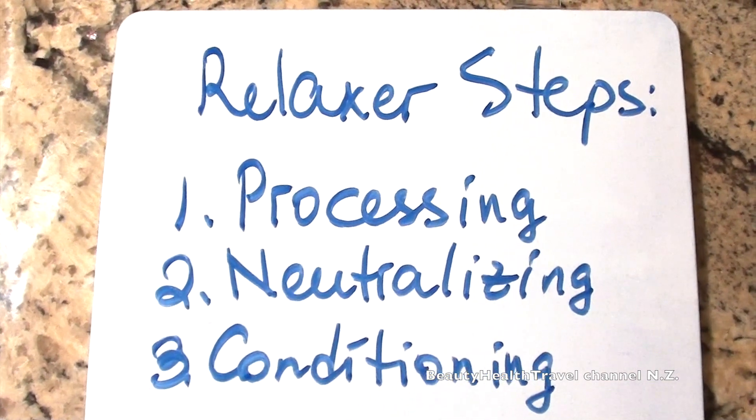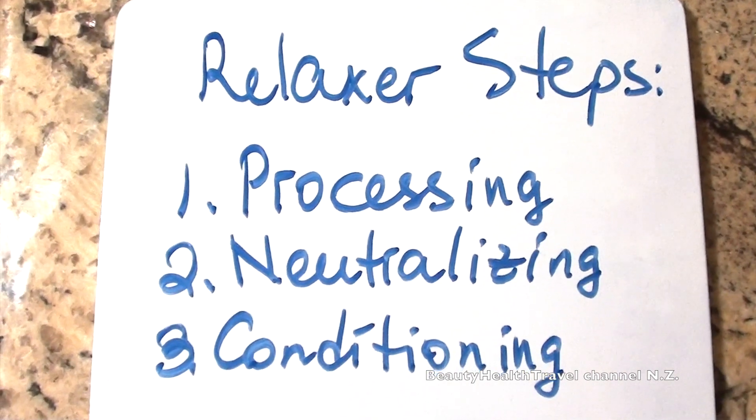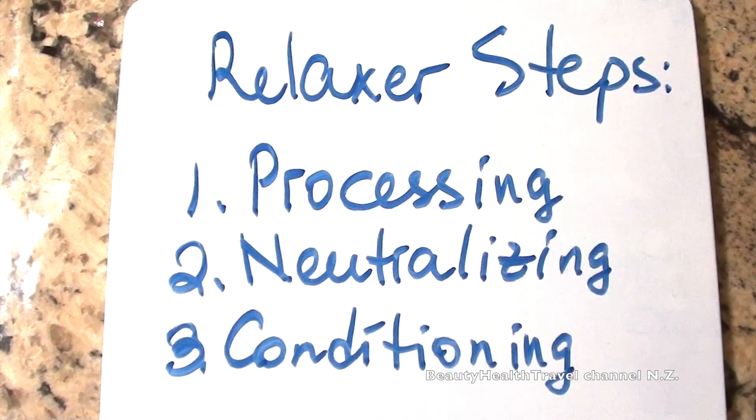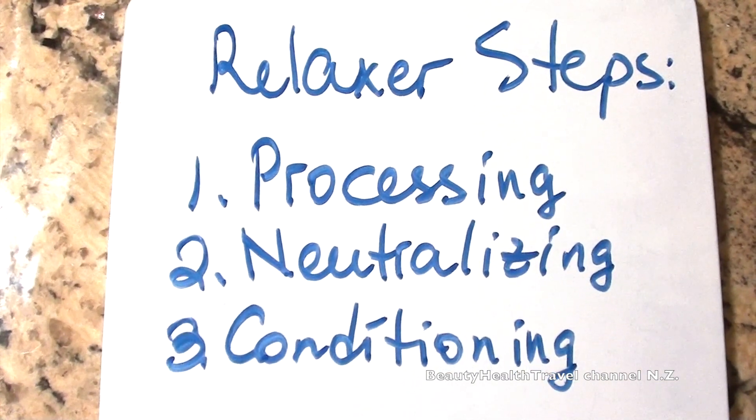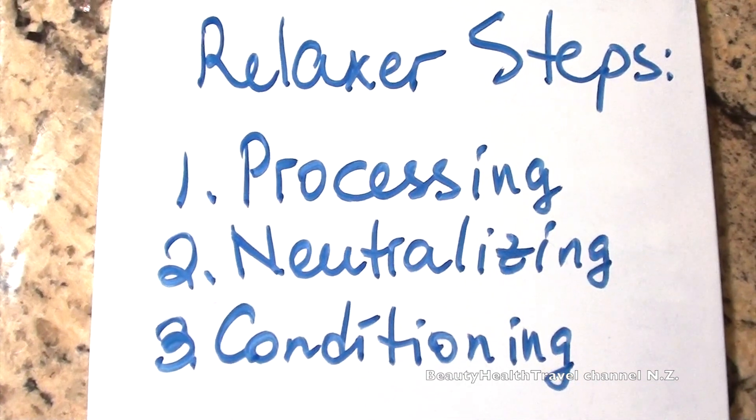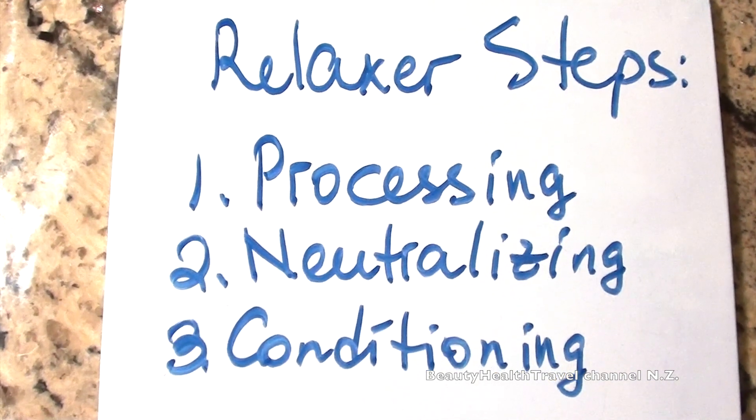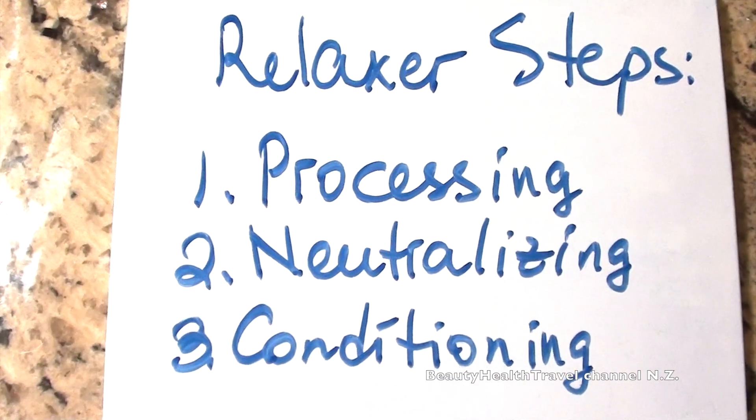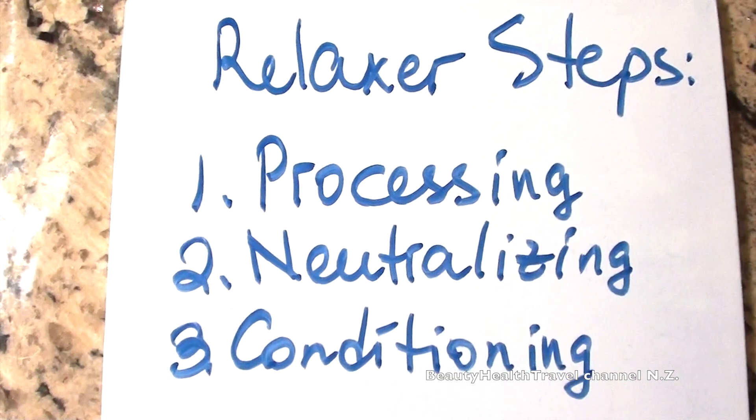So because the hair goes through so much, the relaxer steps are processing, neutralizing, and conditioning. There's three steps. So you process by applying the chemical, soften and swell the hair, and then you can neutralize it or neutralize shampoo it. And then the last step, which is also a mandatory step, is to condition it, to bring it back, to feed it with conditioning packs or fillers or anything that will remedy the hair.